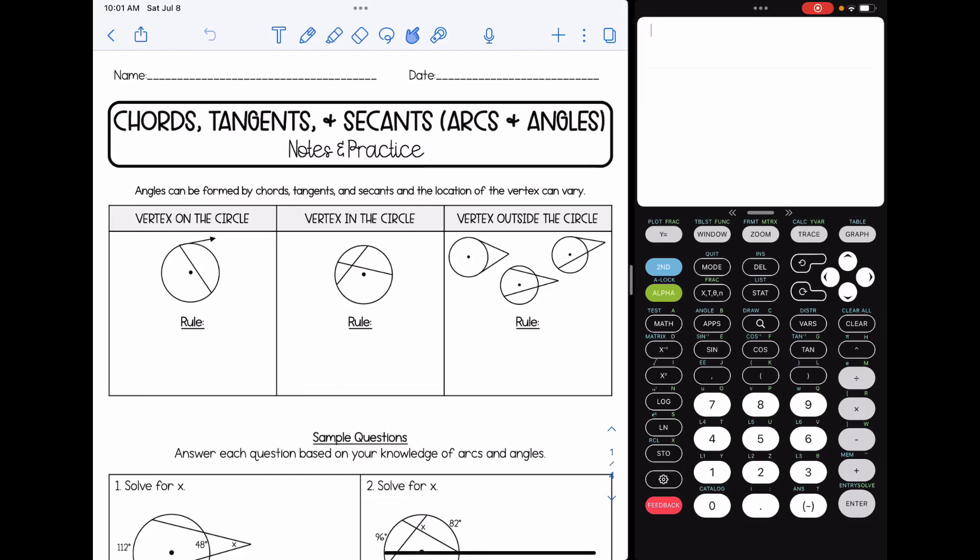Hey, everyone. In this video, we're going to be talking about chords, tangents, and secants. In particular, we're going to be talking about how to find the measures of missing arcs and angles that are formed by those segments. If you're looking for how to find missing segment lengths rather than the arcs and angles, you can head to the next video in this playlist.